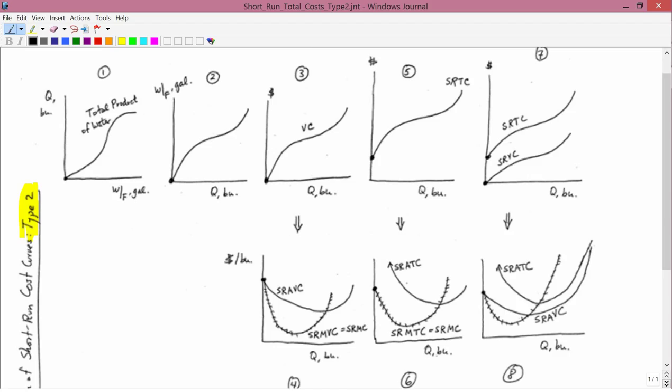To get graph number 2 with Q on the horizontal axis, we want Q on the horizontal axis because we need Q to be on the horizontal axis for all the other graphs. We need to rotate around a 45-degree line.